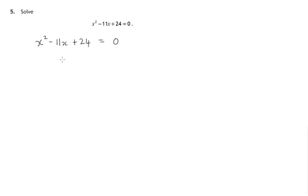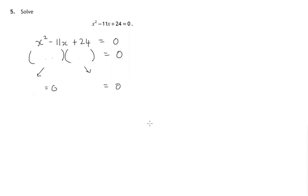Our aim is to factorize this quadratic expression, because something times something gives you 0. One or other of these two factors must be equal to 0. So that's the method we're going to use. Now, factorizing quadratics is one of the topics where there's a host of methods that you may well have been taught.